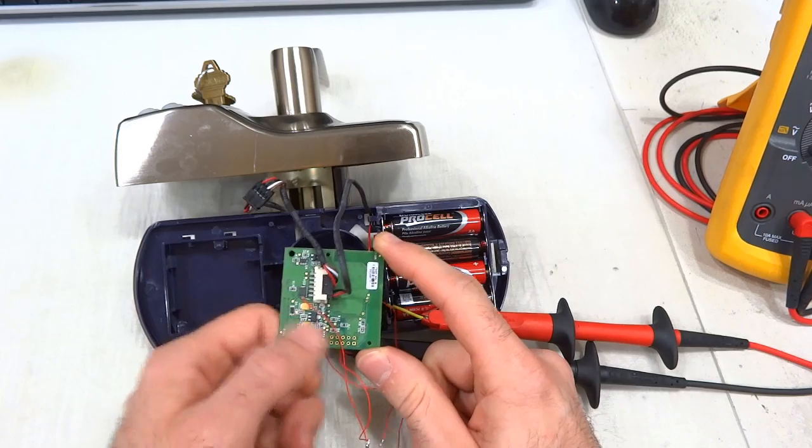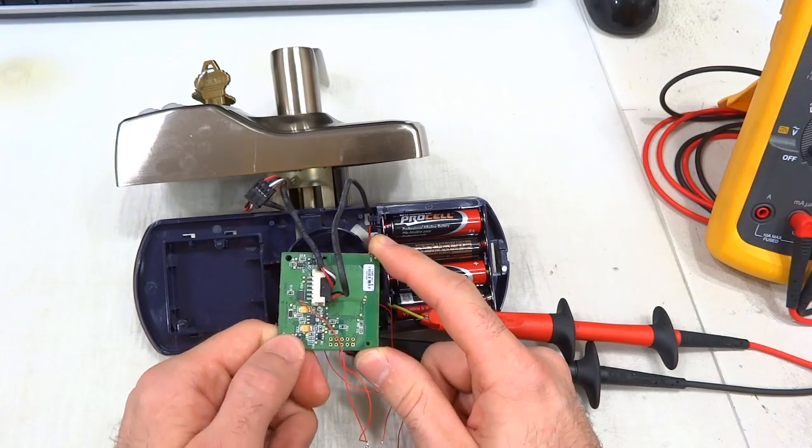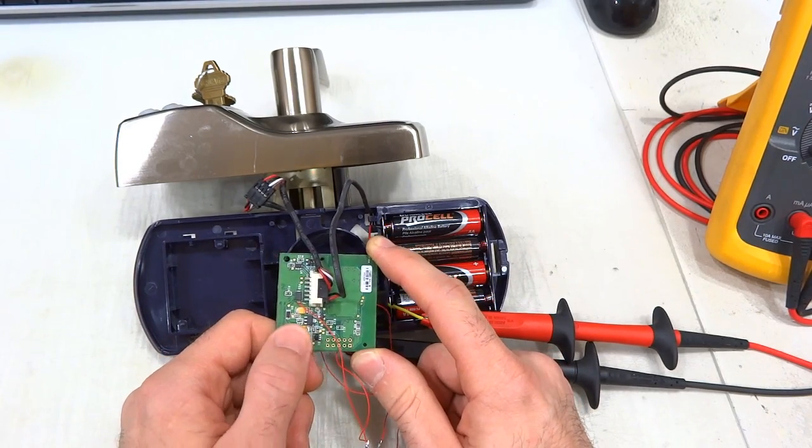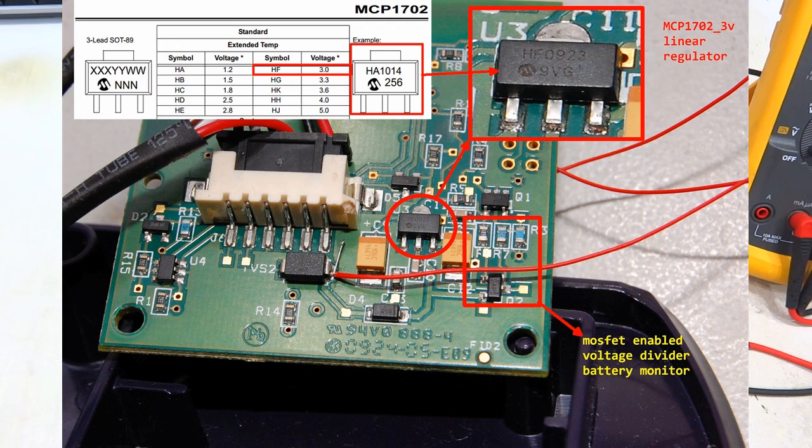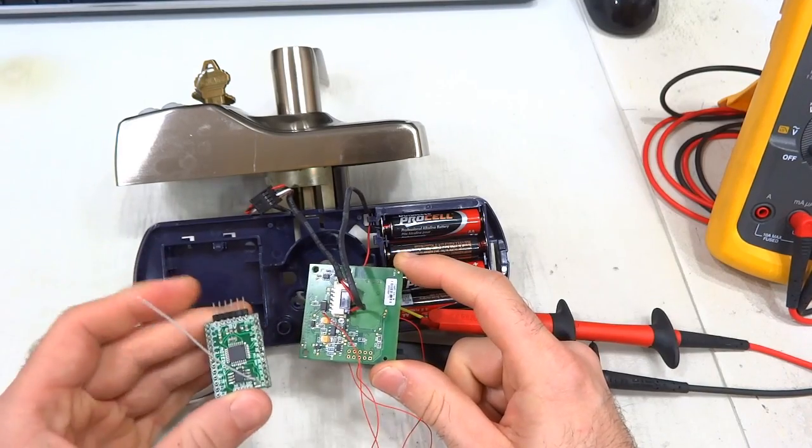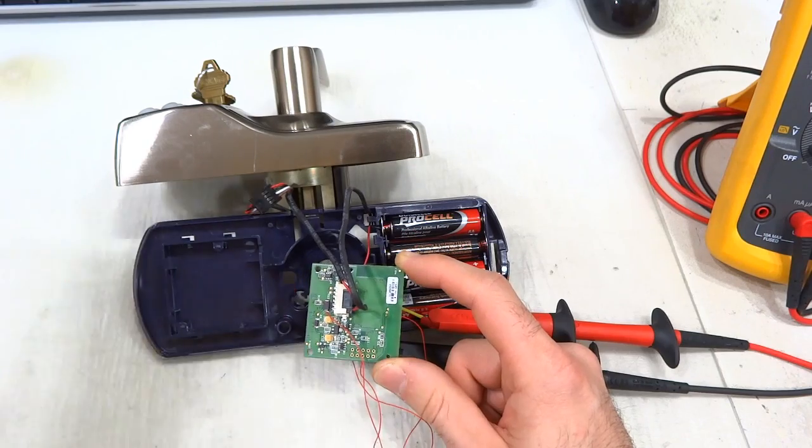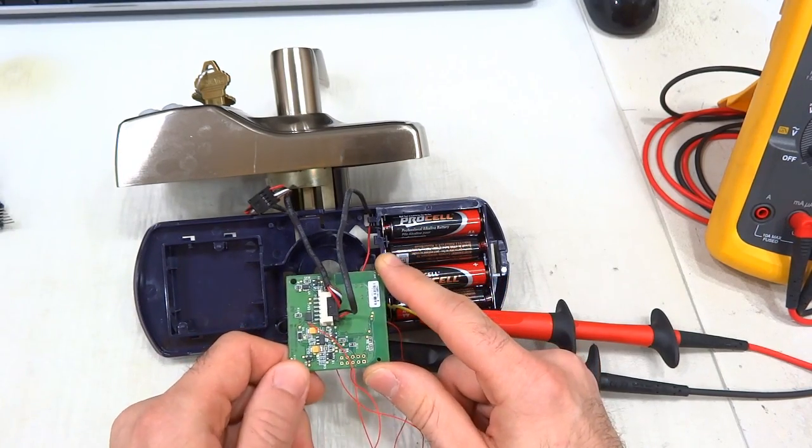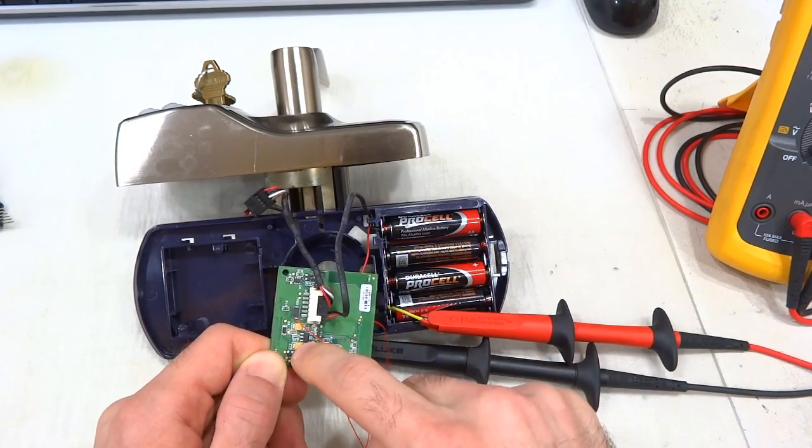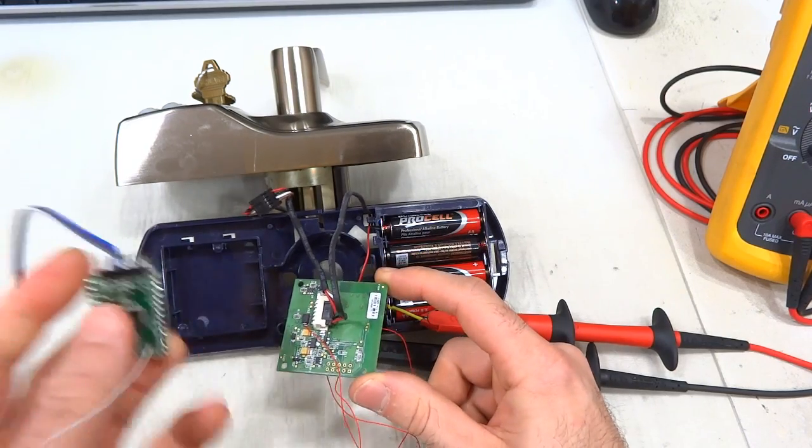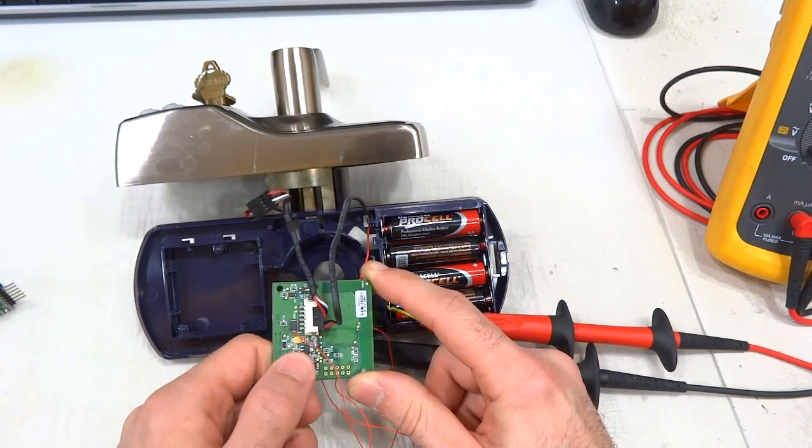As I've discovered, this regulator here is a SOT-89 package Microchip MCP1702 3-volt regulator, which is very interesting because it's the same type of regulator that Motino uses, except it's a different package, a SOT-23 package, smaller. This one is a 3-volt regulator, the Motino is a 3.3-volt regulator. Other than that it's the same company, same type of chip, and it's a linear regulator, not a switching regulator.